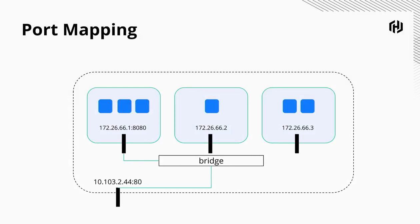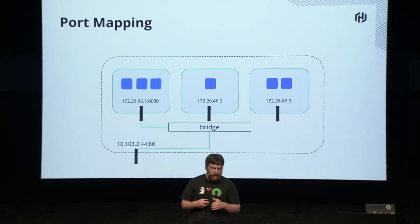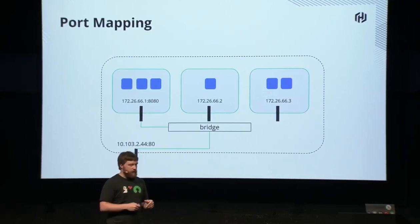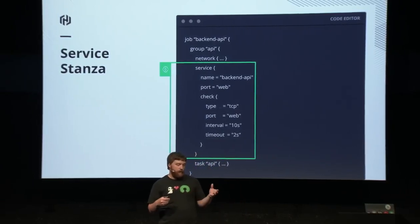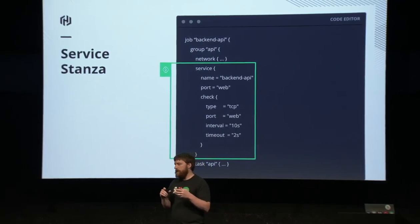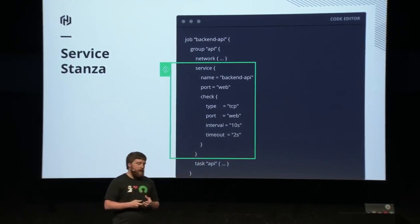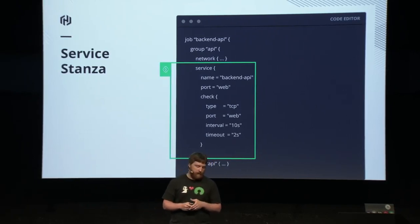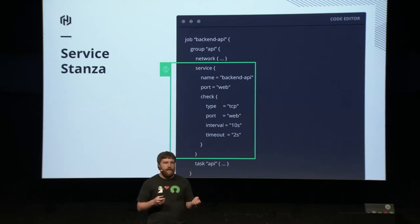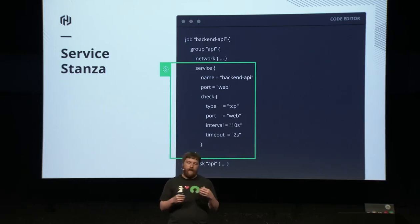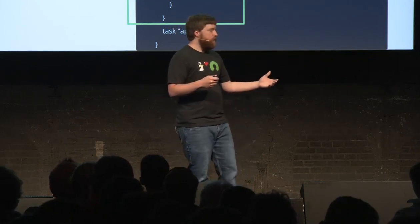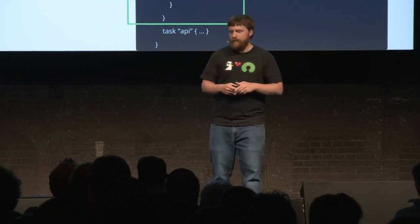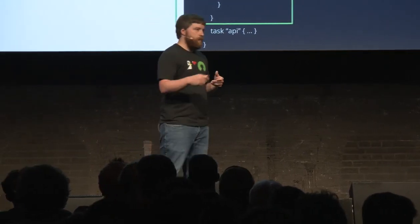Here's a diagram of how this works. There is an allocation running with an IP address different from the host IP, completely isolated, binding to port 8080. We forward that to the host IP at port 80. We've also made the service stanza available in the group stanza, because your task group becomes the base unit of networking. Your service can be composed of other tasks running inside this task group. You can have script checks that run against different tasks and report the health of that service. This service stanza will also register the correct port with Consul so other services in your cluster communicate through those forwarded ports correctly.